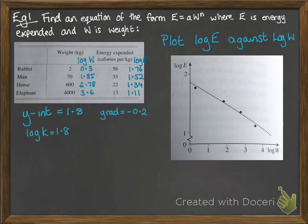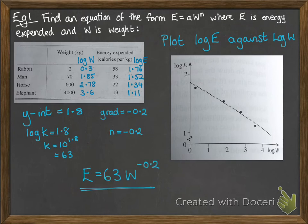From the y-intercept that gives us log k equals 1.8, so k equals 10 to the power of 1.8 which is 63. From the gradient that gives us n equals minus 0.2. So then we put it back into that form. We've put in E equals 63W to the power of minus 0.2.